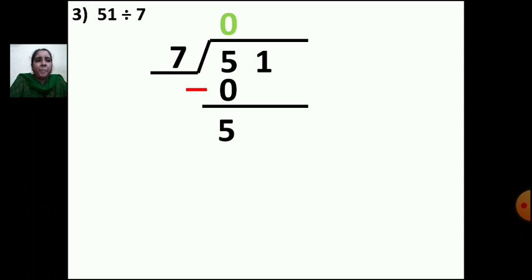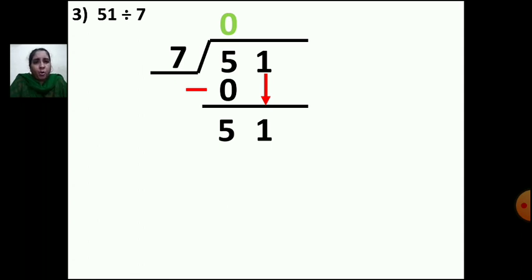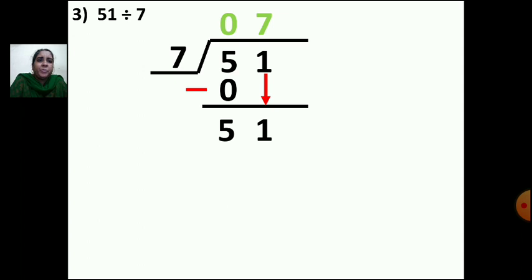Put one arrow mark and bring 1 down. Now you have 51. You need to find which number in the table of 7 is smaller than 51. Say the table of 7: 7 ones are 7, 7 twos are 14, 7 threes are 21, 7 fours are 28, 7 fives are 35, 7 sixes are 42, 7 sevens are 49. 49 is very close to 51. So take 7 sevens are 49. Write 7 up and 49 down.